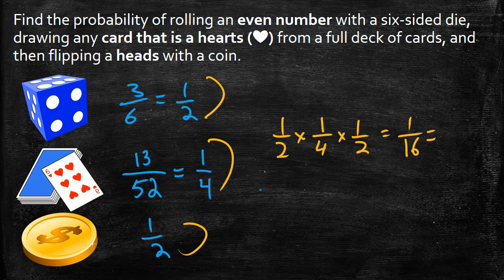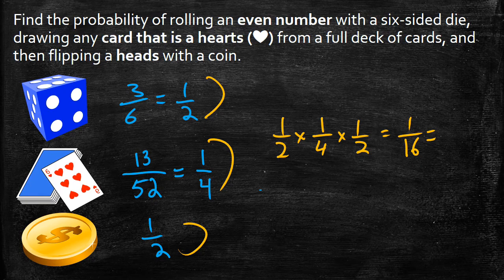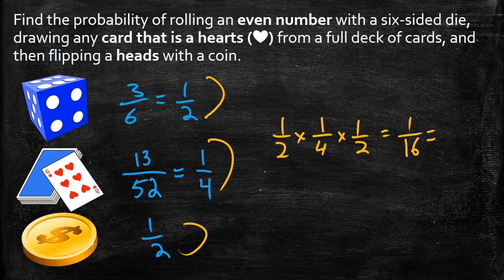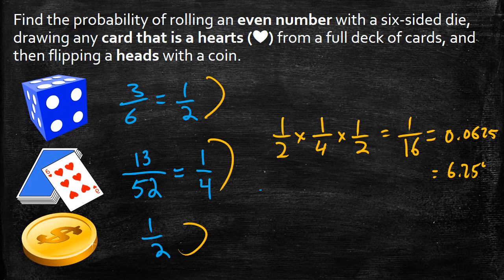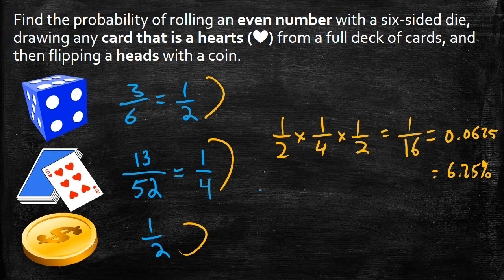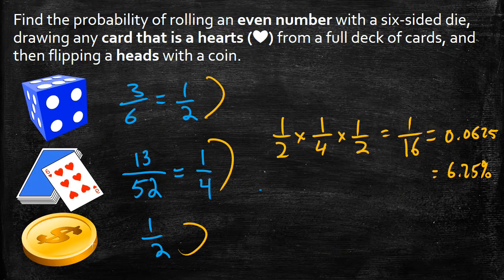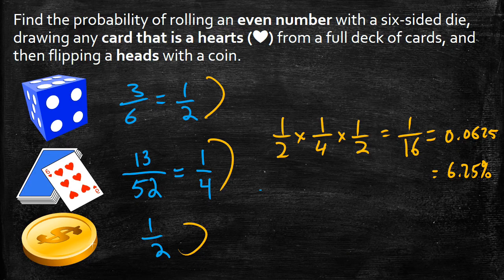And I can turn this into both a decimal and a percent. So 1 divided by 16 is going to give me 0.0625, and in percentage form, that is 6.25%. So in this exact situation, you have a 6.25% probability or likelihood of rolling an even on the dice, pulling a heart out of the deck, and then flipping a heads with a coin.